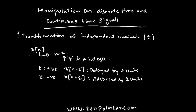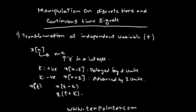The similar method is applicable for continuous time signals. For continuous time signals, we represent it as x of t. If k is positive, this becomes x of t minus k, a signal x of t delayed by k units of time. And if k is negative, the signal becomes x of t plus k, which means x of t is advanced by k units. This is one method of manipulating signals — we transform the independent variable t, resulting in either delaying or advancing of the signal.